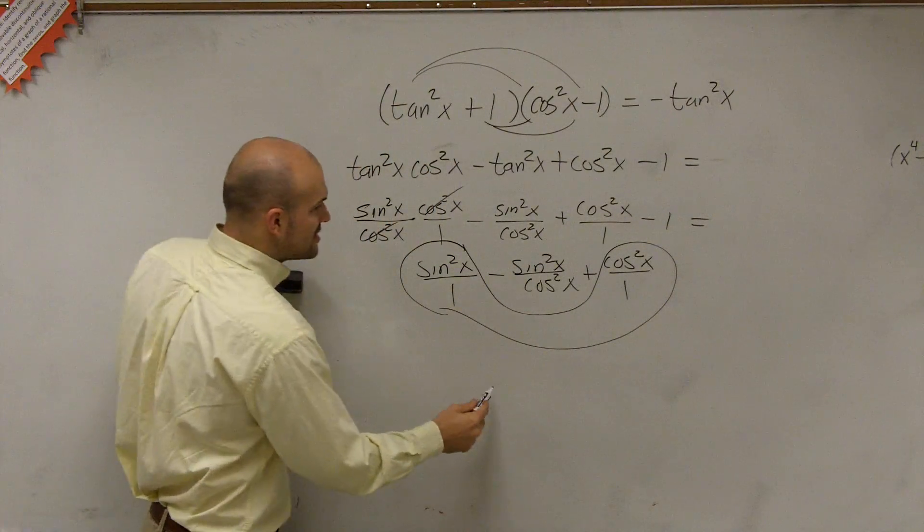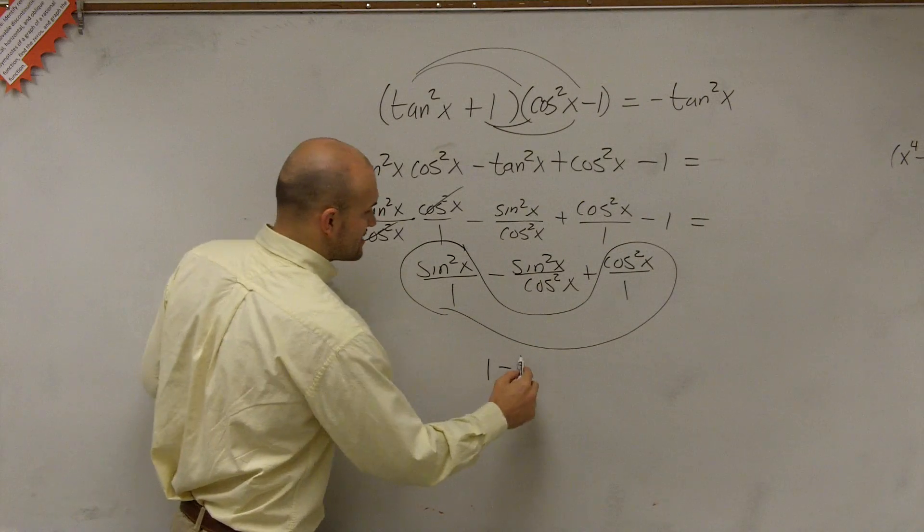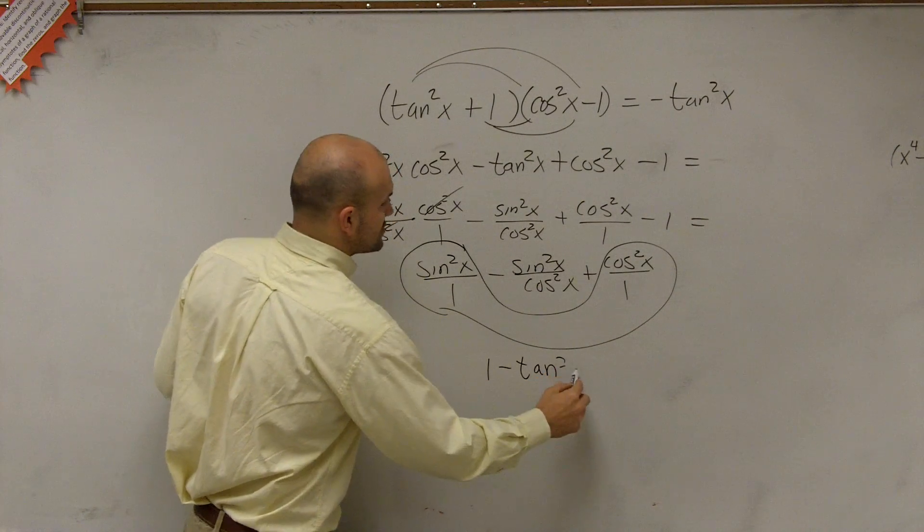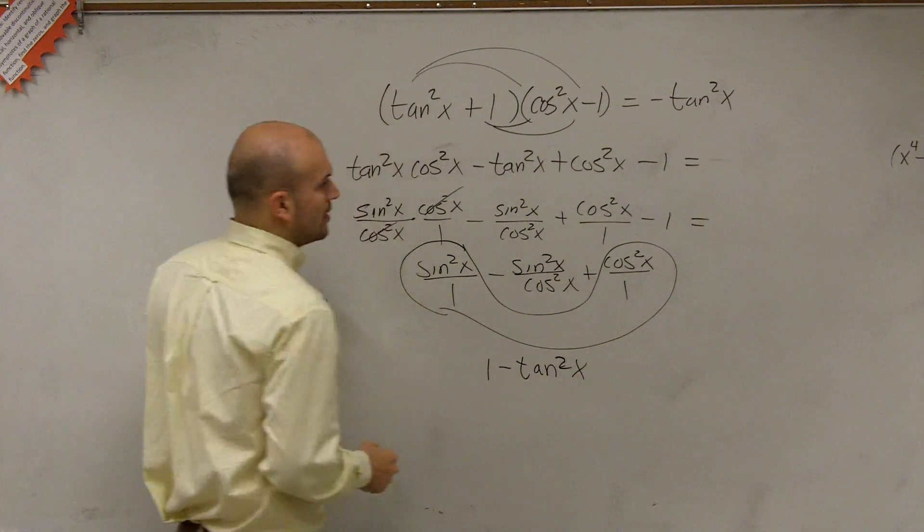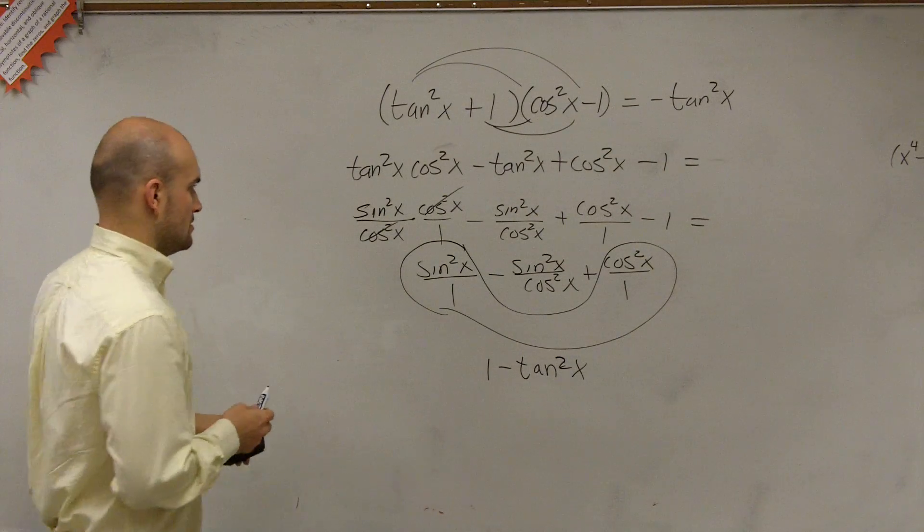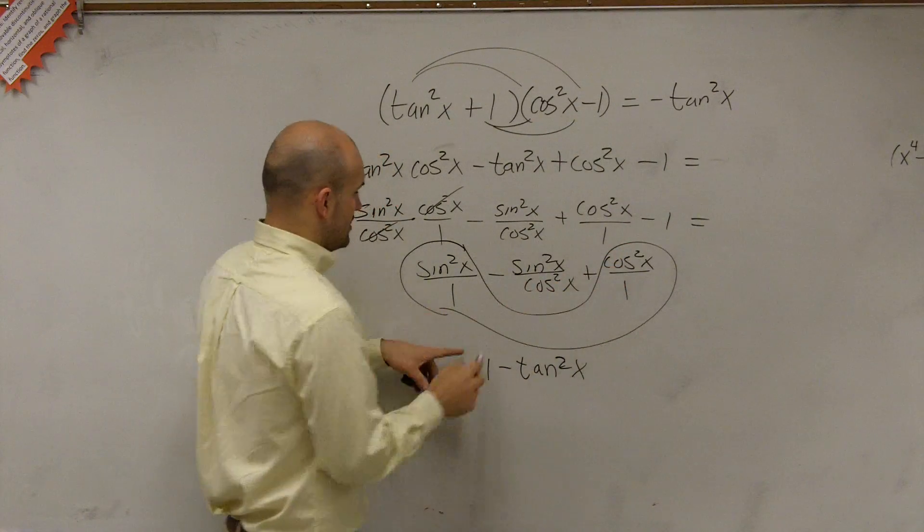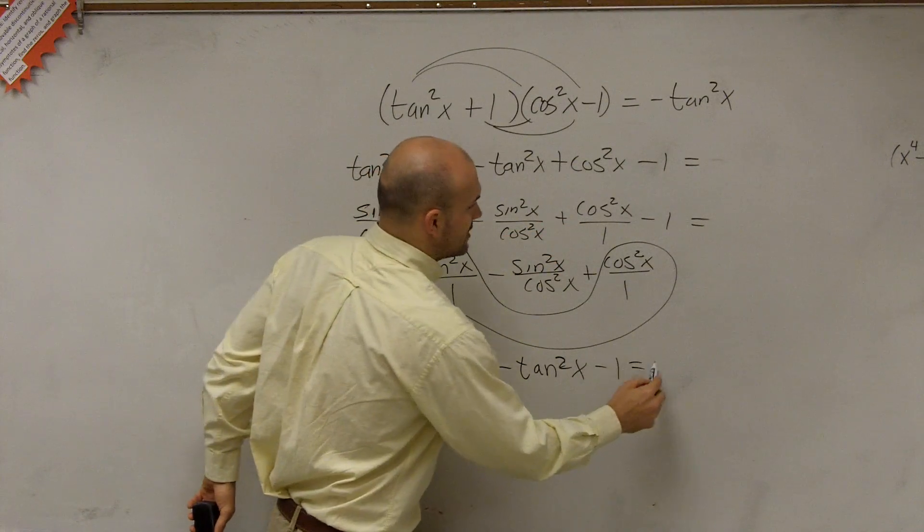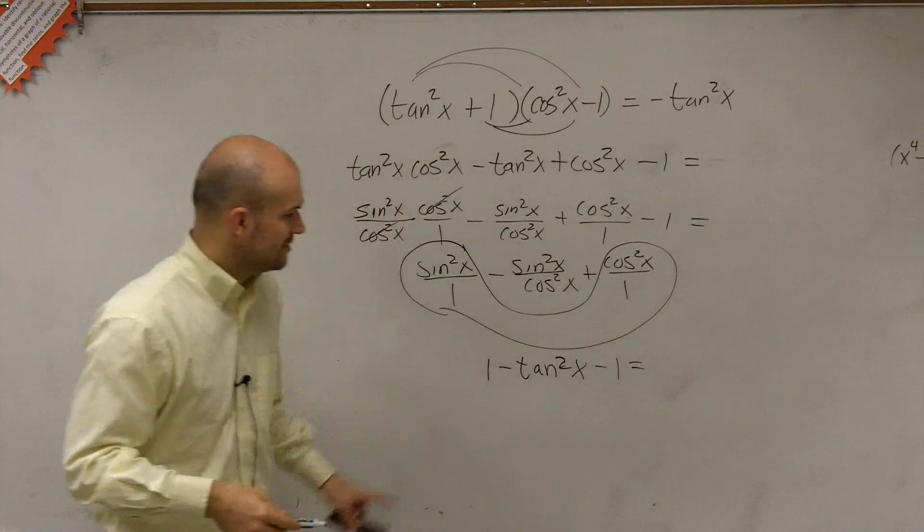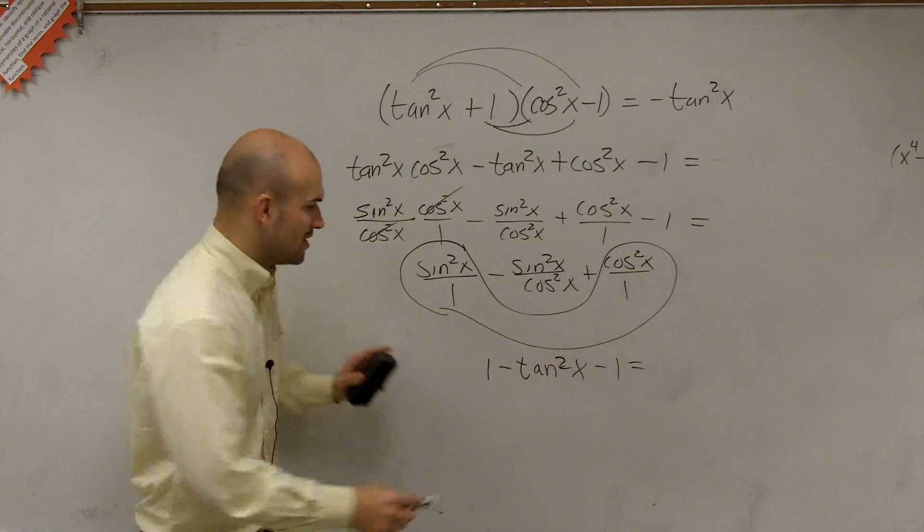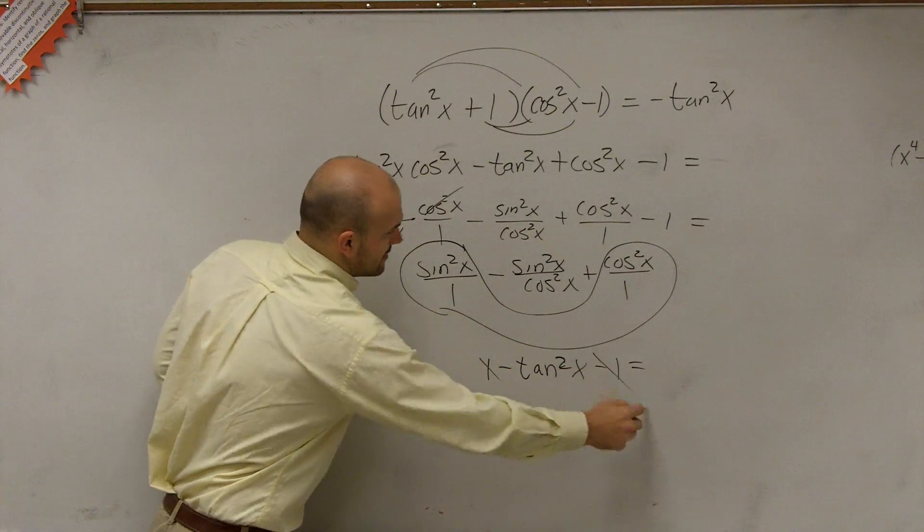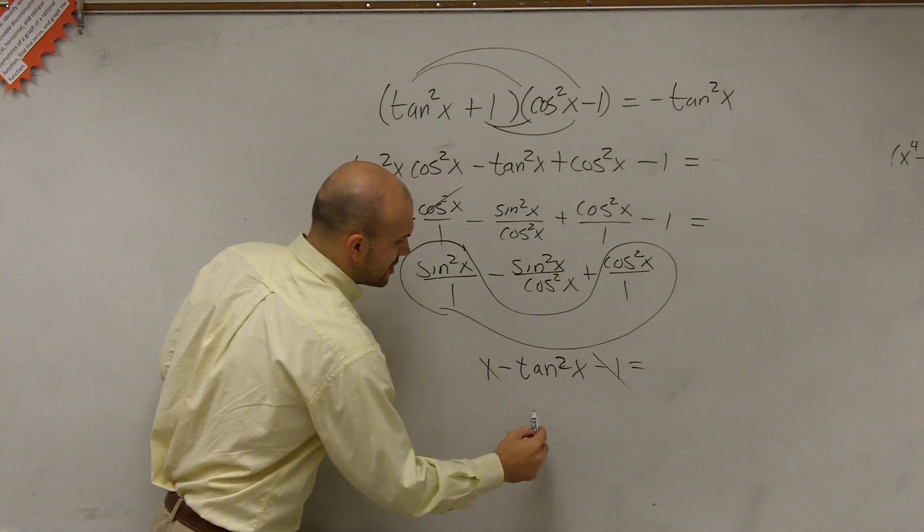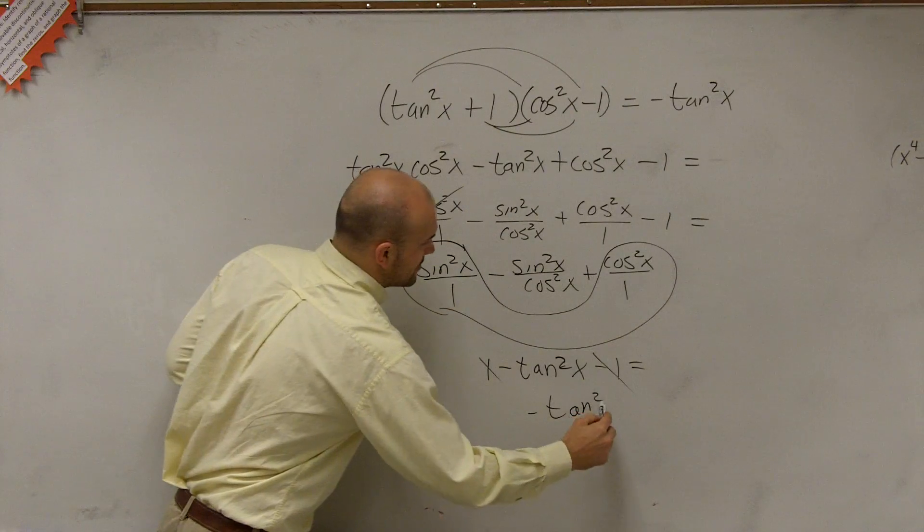I just rearranged it in my problem. So now I have 1 minus tangent squared of x plus 1. I'm sorry. So I have 1 minus tangent squared of x minus 1 equals my right side. Now, 1 minus 1, those now cancel to 0.